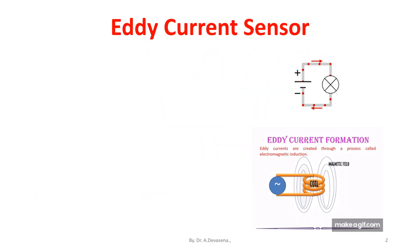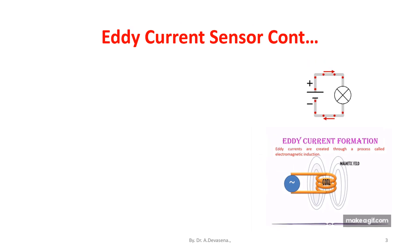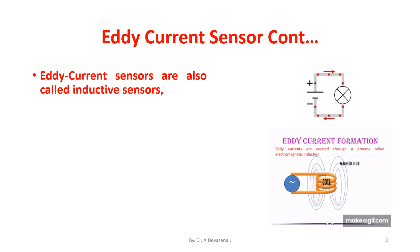Eddy current sensors are non-contact devices capable of high-resolution measurement of the position or change of position of any conductive target. Eddy current sensors are also called inductive sensors. But generally, eddy current refers to precision displacement instruments or non-destructive testing probes, and inductive refers to inexpensive approximative switches.